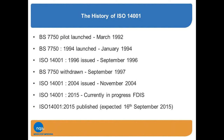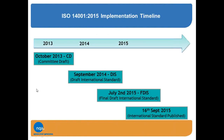Environmental standards have been around for 23 years. March 1992 was the launch of the very first standard. The date at the bottom of this slide originally said 16th of September, but the actual date is now the 15th of September — next Tuesday is the publication of the new standard, confirmed by Martin Baxter from IEMA, who led the UK delegation to the committee writing the standard. So next Tuesday is D-Day — that's when the new standard will be published and available.